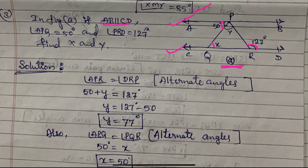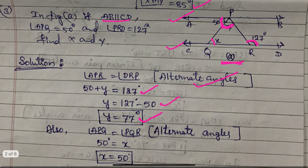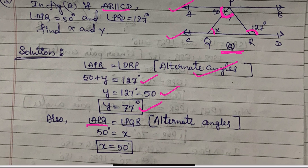First, Y equals 77 degrees. These two angles are alternate angles, so 50 plus Y equals 127, which gives Y equals 127 minus 50 equals 77 degrees. Similarly, angle APQ equals angle PQR as alternate angles — since they are alternate angles and equal, X equals 50 degrees.